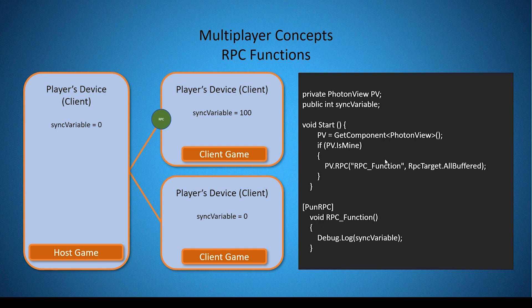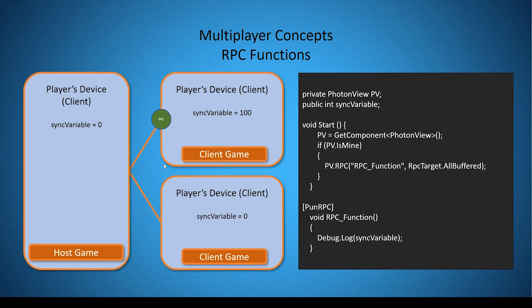Now let's look at how an RPC function is sent and executed across the network. I've created a diagram depicting the connections of a multiplayer game with three different devices running three different instances of the same game — one running as host and the other two connected as clients. There's a game object that exists in each instance, synchronized across clients via a PhotonView. In our scenario, the sync variable of the top-right client equals 100, while the sync variable on all other clients is set to zero.